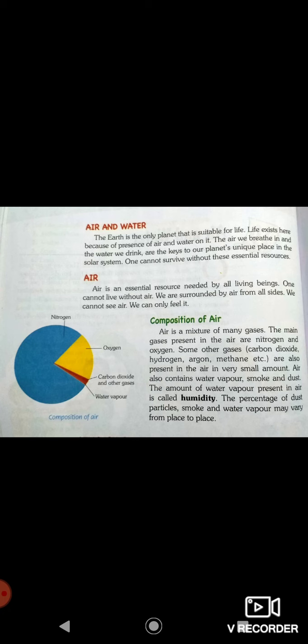The percentage of dust particles, smoke and water vapor may vary from place to place. The percentage of dust, smoke, and water vapor is different according to different places. If you observe, if a person is living in Delhi, the air there is polluted. There is more smoke, more dust particles, more carbon dioxide, because more vehicles are running and there are industries. On the other side, if you observe the air of a village, there are not many industries and vehicles are not used as much, so the smoke and dust particles in the air there will be less. So that depends on place to place.